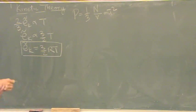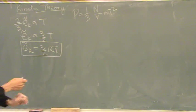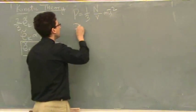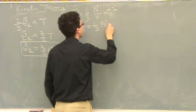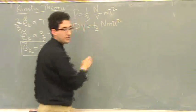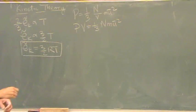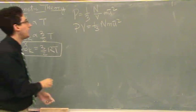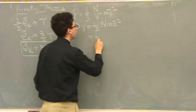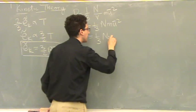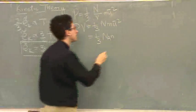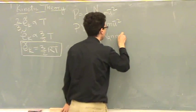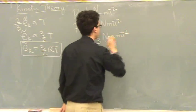I'm going to move things around a little bit, do a couple of substitutions. PV equals one-third, N, M, U bar squared. And then, equals one-third, N, remember that's N_A times, Avogadro's number times the number of moles, times M, times U bar squared.